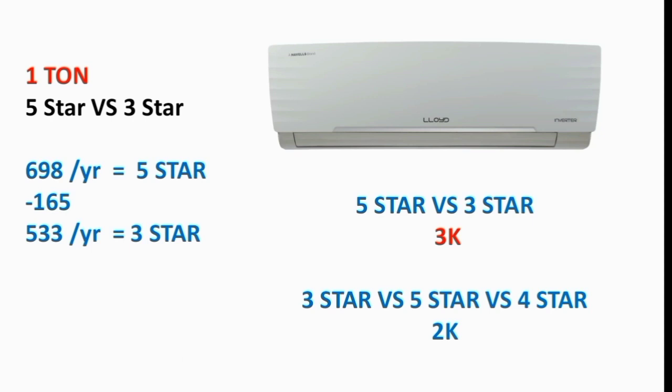The difference between the two is about 160 units. So with 5-star AC you save more units. If you use the AC heavily, like 7 to 10 hours per day, choosing the 5-star AC over the 3-star will save you on electricity bills. With the same budget amount, the 5-star AC is the better option.